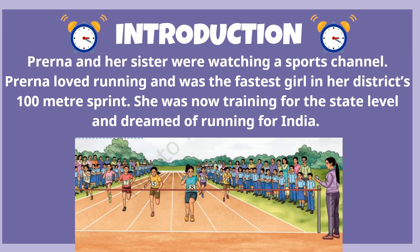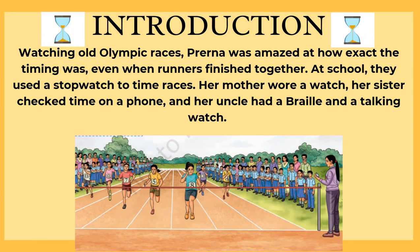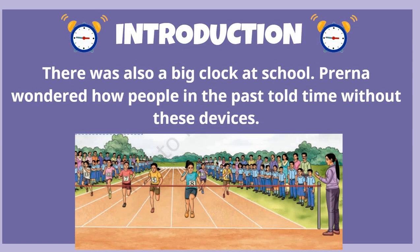Let's start with a short story. Prerna and her sister were watching a sports channel. Prerna loved running and was the fastest girl in her district's 100-meter race. She was training for the state level and dreamed of running for India. Watching old Olympic races, she was amazed at how exact the timing was, even when runners finished together. At school, they used a stopwatch to time races. Her mother wore a watch, her sister checked time on a phone, and her uncle had a braille and a talking watch. There was also a big clock at school. Prerna wondered how people in the past told time without these devices.